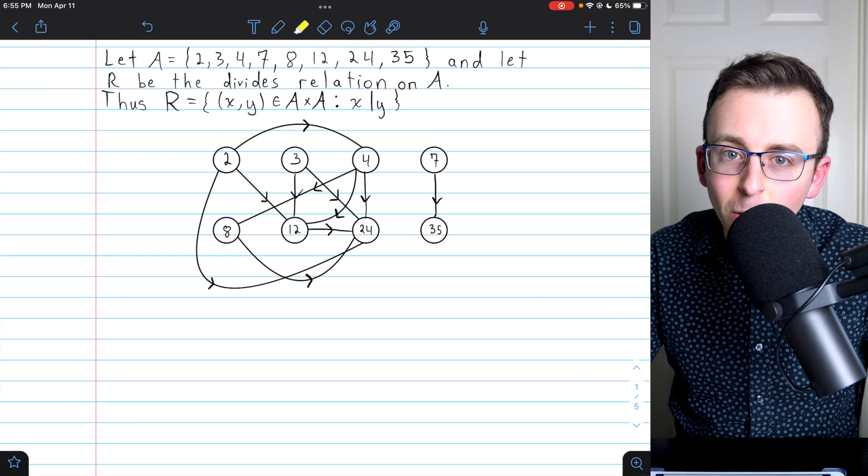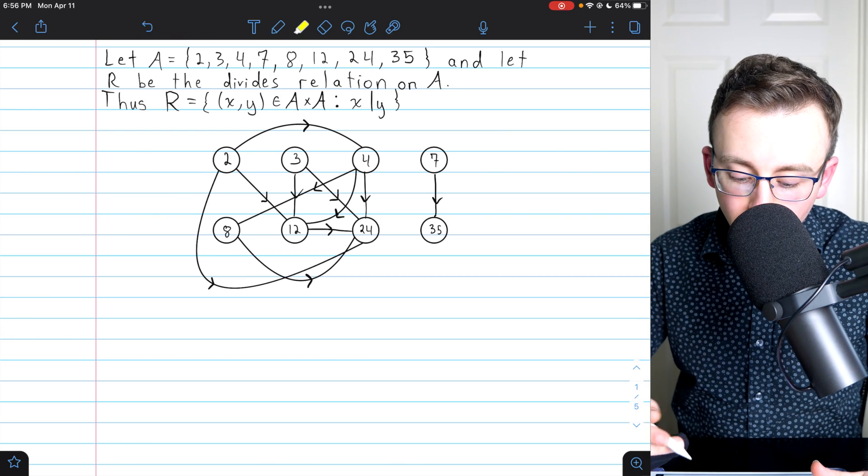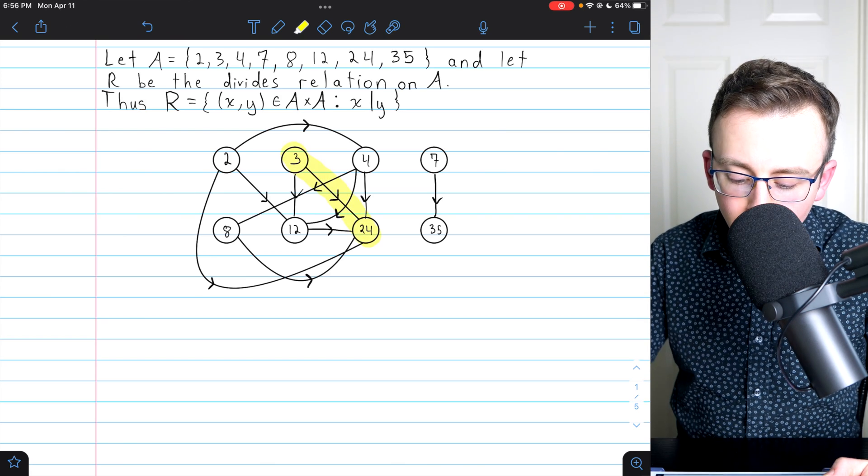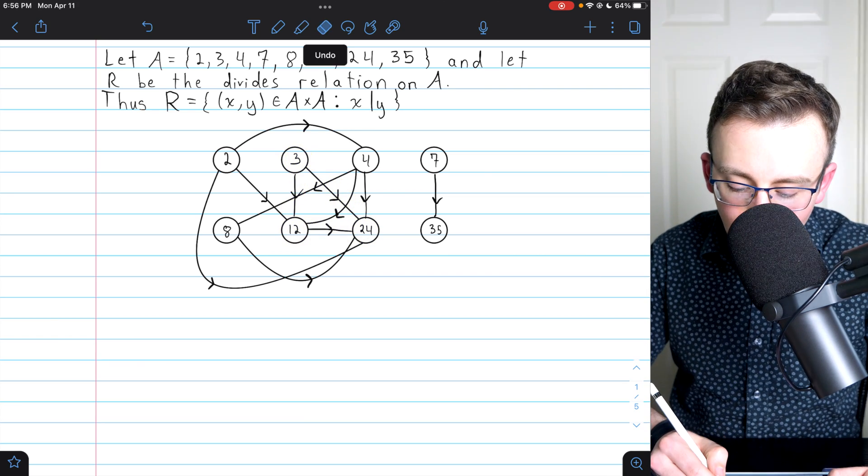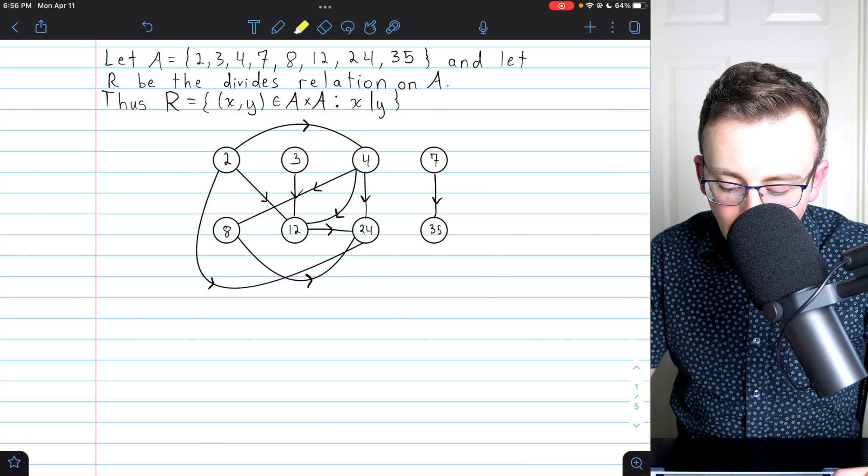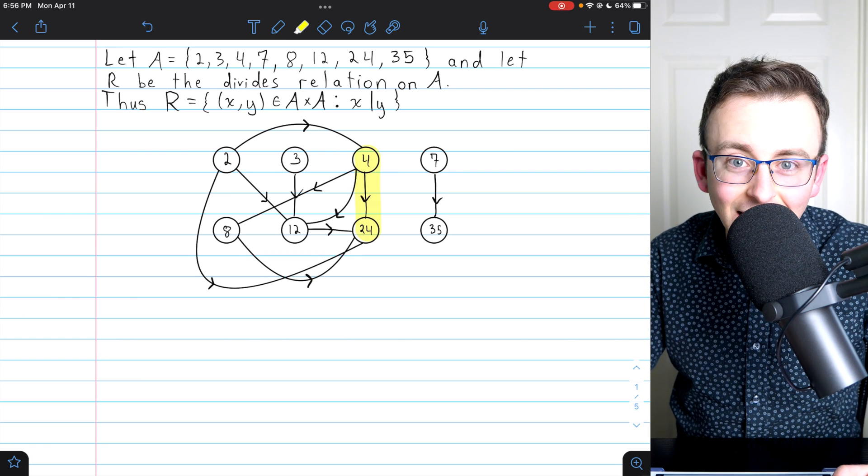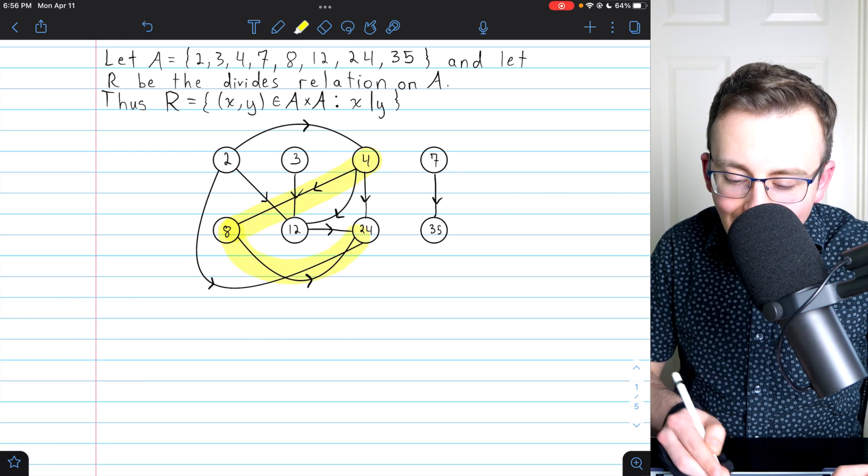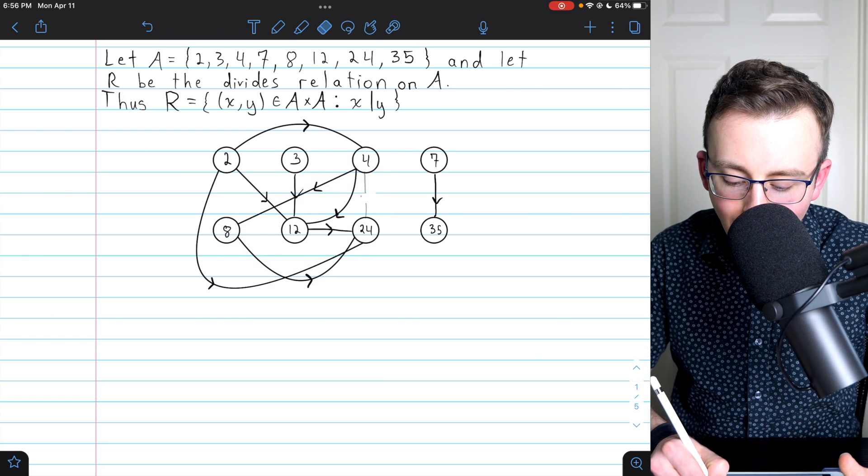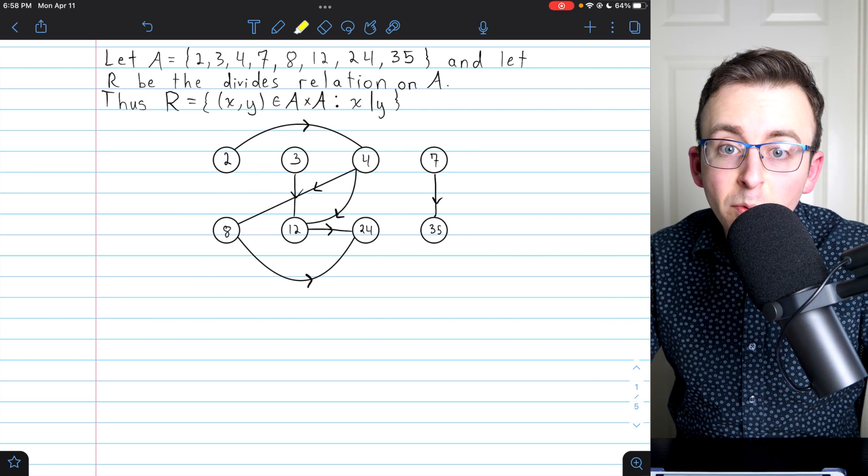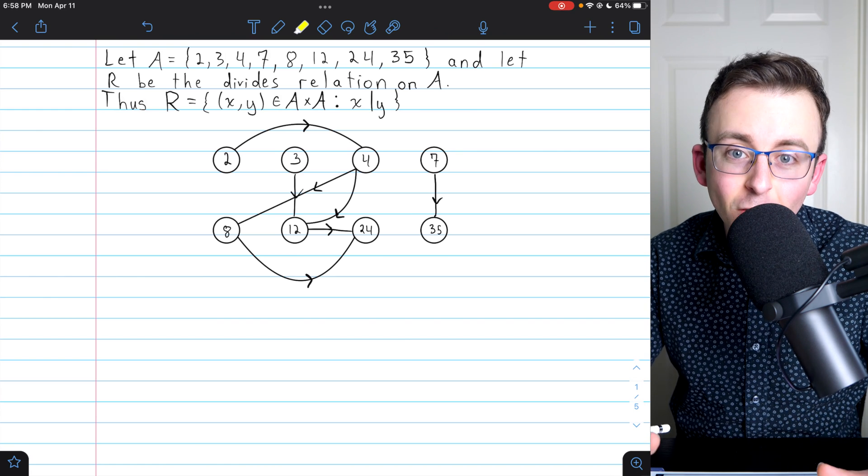So that's the next step. I'm going to get rid of all the arrows that are basically a result of transitivity. Just to show you a couple more examples of that, I see that 3 divides 24. But of course it does because it divides 12, and 12 divides 24. So I can get rid of that edge. Another example, I see that 4 divides 24. But again, of course it does. 4 divides 8, and 8 divides 24. So that's just a result of transitivity. I don't need this arrow going from 4 to 24. Now I've erased all the arrows that just come from transitivity, and we've got a much cleaner diagram.